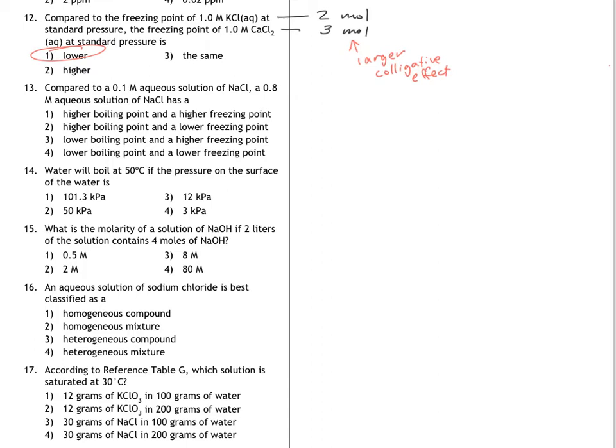And in number 13, we're asked to compare this one, this concentration to this concentration. But it's going to be about boiling points and freezing points. This guy is higher, so it's going to have a stronger colligative effect. And they are asking me about this one. So this one would have the larger colligative effect, which would mean it would have a higher boiling point and a lower freezing point. So choice 2 is my answer.